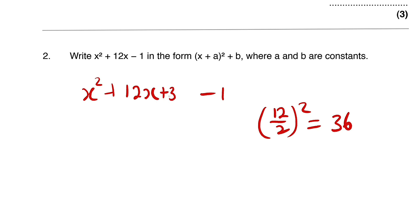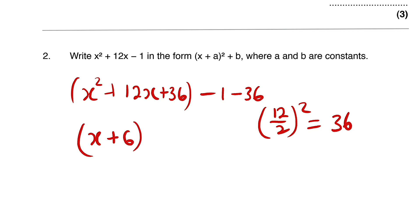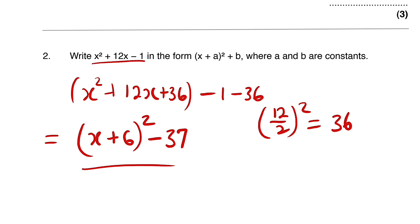So we add 36 here and subtract 36 here. This trinomial can be factorized as x plus half the coefficient of x — half of 12 is 6 — all squared. Then minus 37, because negative 1 minus 36 is negative 37. Hence x plus 6, all squared, minus 37 is the same as x squared plus 12x minus 1, which is in the required form.